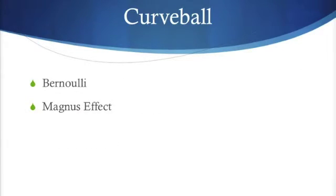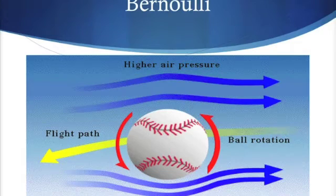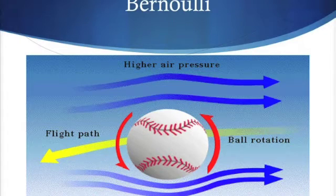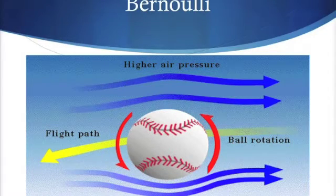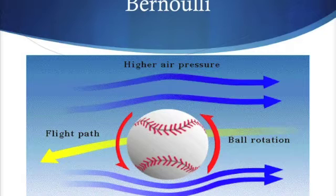Now we're going to examine the fluid mechanics of the curveball by discussing how it relates to Bernoulli's principle and the Magnus effect. When throwing a curveball, angular or rotational velocity is indirectly proportional to tangential velocity. Relating the curveball to Bernoulli's principle — where a fluid moves faster, there is less pressure. On one side of the ball, the air is moving faster, resulting in the other side having more pressure. This forces the ball to travel in the direction with less pressure. The force that pushes it is defined as the Magnus force, which we will discuss in the next slide.